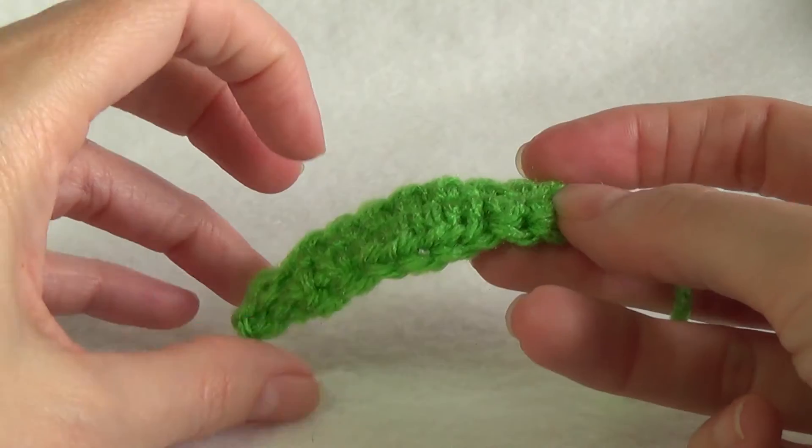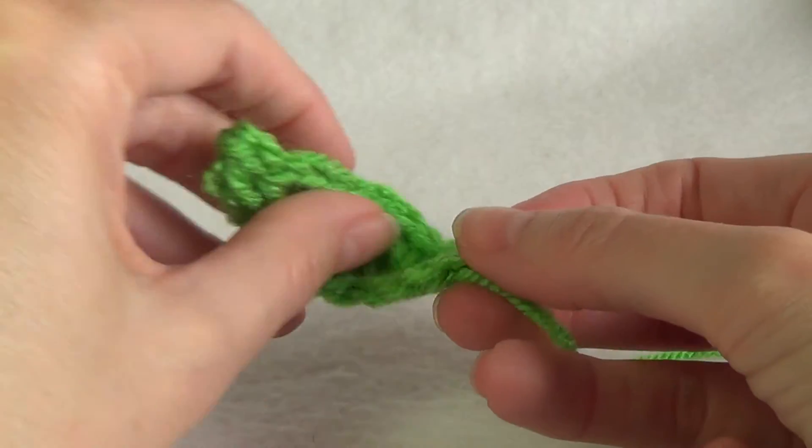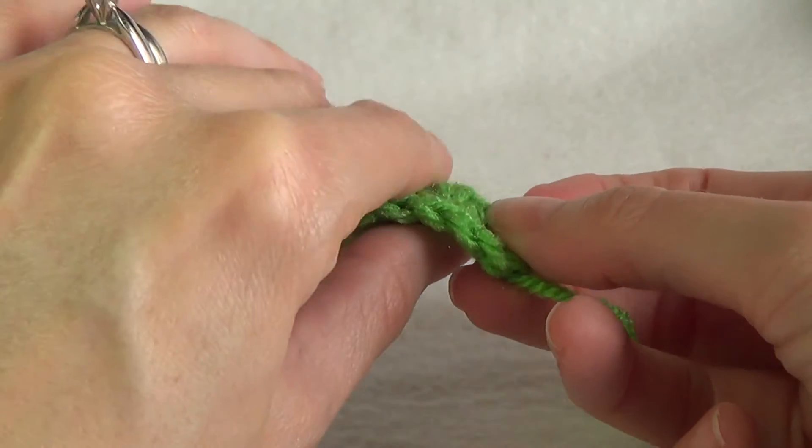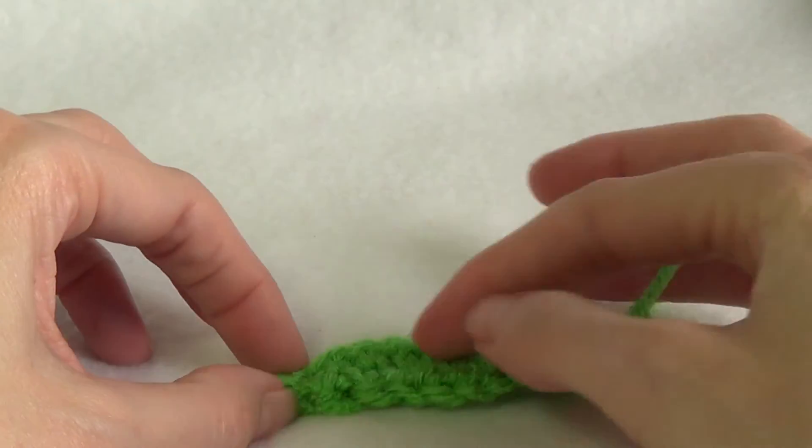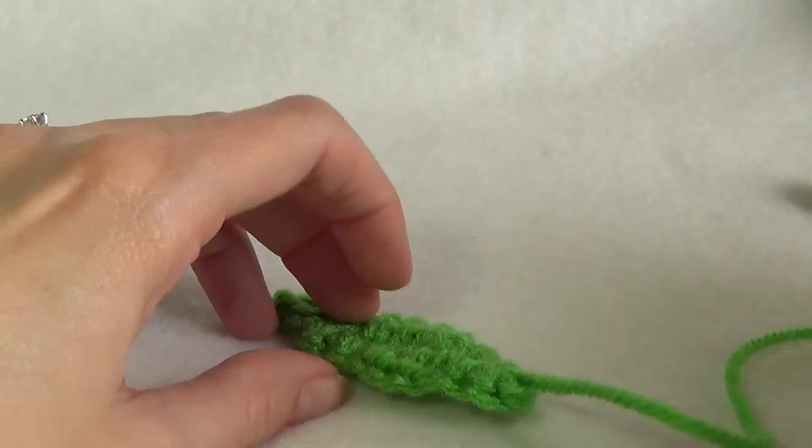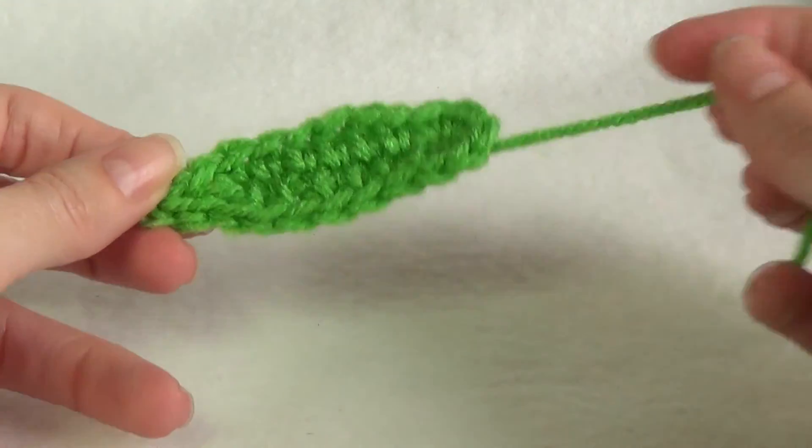And by sewing through there it gives it a little bit of, I don't know what the word is, but it can hold its shape more because you've put another lot of yarn through there so it gives it a bit more stiffness to it. And your leaf is good to go to sew on any project.